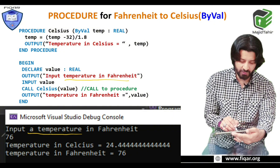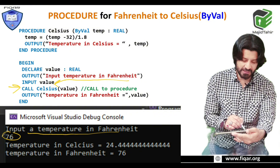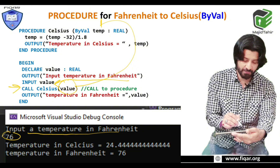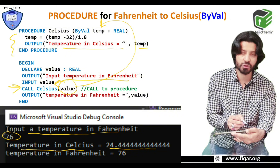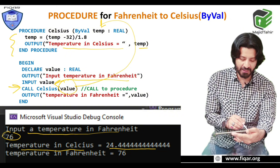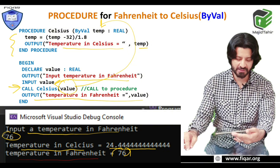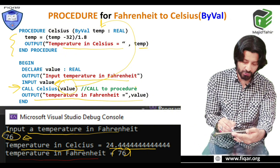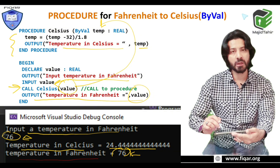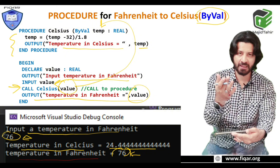When this code runs, the user inputs a Fahrenheit value — for example 76. This value is passed to the temp parameter. The procedure runs the conversion and outputs 'temperature in Celsius = 24.4444'. After the procedure, the program outputs 'temperature in Fahrenheit = value', and because this is by val, the original value is unchanged — it still displays 76. So the original value of 76 is preserved.